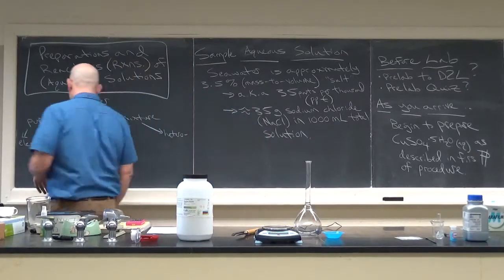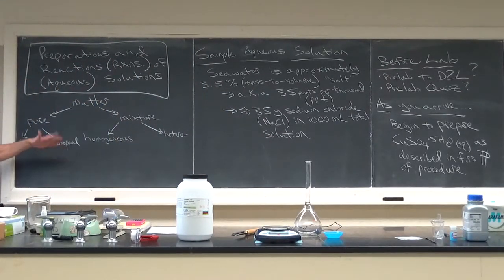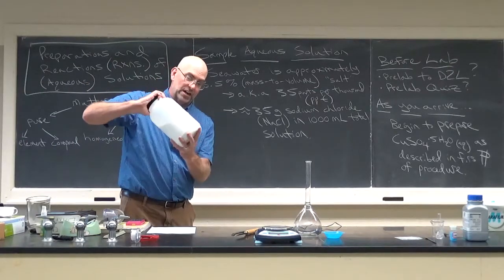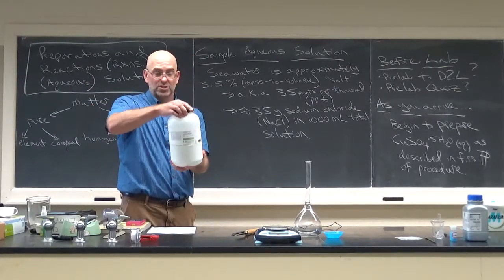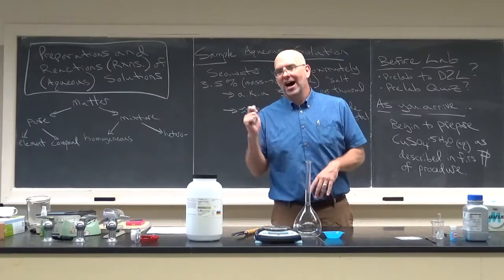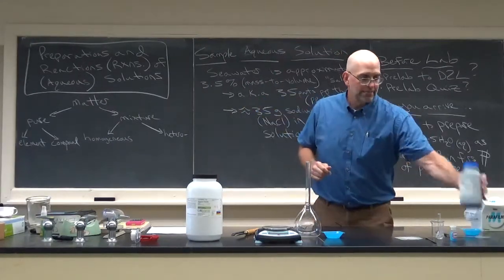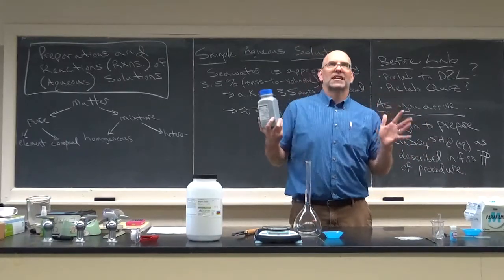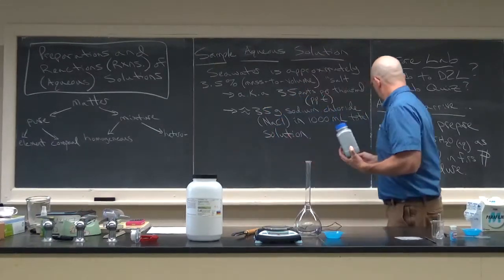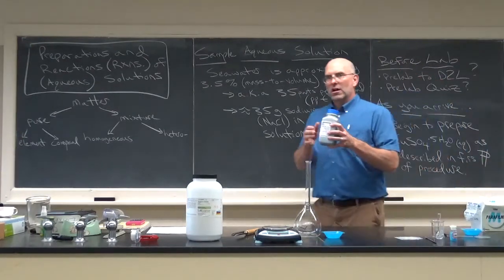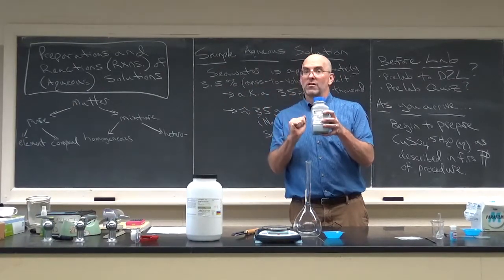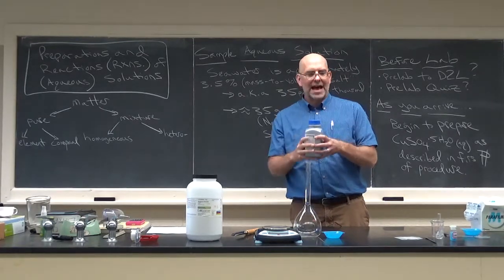When you take two or more elements and combine them, you get a molecule or compound. Sodium chloride is a compound—very pure table salt. The compound you'll deal with today is copper sulfate pentahydrate. The 'pentahydrate' means that for every formula unit of CuSO₄, there are five water molecules trapped inside the crystals—that's important for the math.